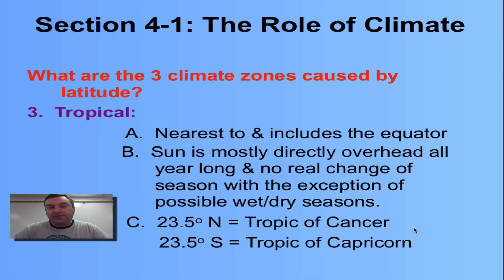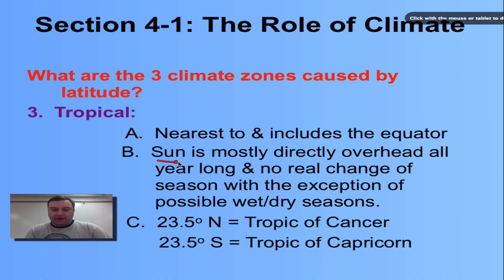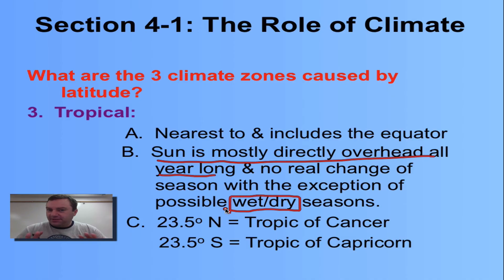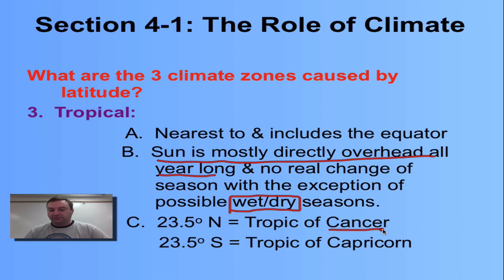The last zone is tropical. This is the one nearest to and including the area around the equator. In the tropical zone the sun is mainly directly overhead all year long, or at least for part of the year, so you're not going to have real changes of seasons like fall, spring, winter, and summer. It's very common for these areas to have a wet and a dry season. Not everything in the tropical zone is a rainforest, though a good portion can be. It's bordered in the north by the Tropic of Cancer and to the south by the Tropic of Capricorn.